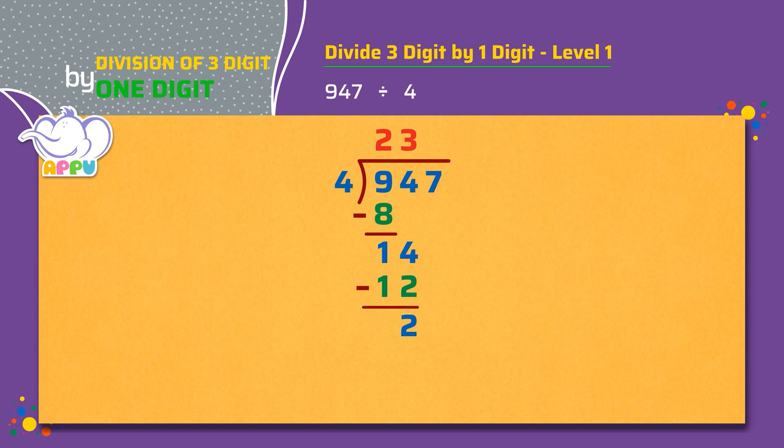Next, we bring down the number in 1's place, which is 7. So the number now becomes 27. We repeat the steps. We divide again. We figure out how many 4's does it take to make 27 or almost 27, which is 6.